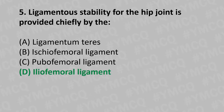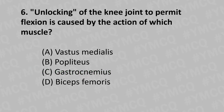Moving to our sixth question: unlocking of the knee joint to permit flexion is caused by the action of which muscle? Option A: vastus medialis, Option B: popliteus, Option C: gastrocnemius, Option D: biceps femoris. And the answer is Option B: popliteus.